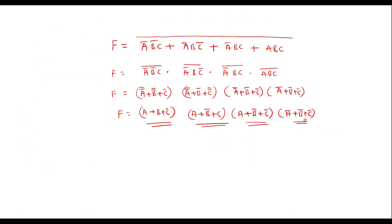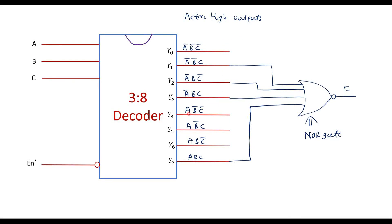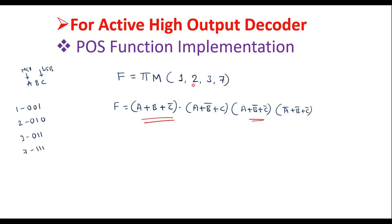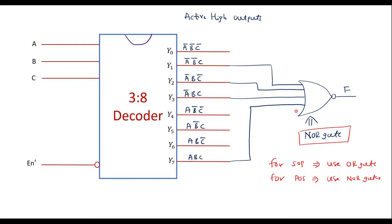So even using an active high output decoder we can implement POS functions. To summarize: when implementing SOP functions using an active high output decoder, use an OR gate; when implementing POS functions, use a NOR gate. For either case, take the same output lines corresponding to the given min terms or max terms from the decoder. In the next video I will explain how to implement SOP and POS using active low outputs. Thank you for watching.